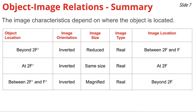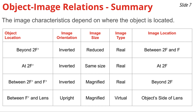When the object is between 2F prime and F prime, the image is located beyond 2F on the opposite side of the lens — inverted, magnified, and real. Finally, when the object is between the focal point and the lens, between F prime and the lens, the image is on the same side of the lens as the object — noticeably magnified, upright, and virtual.